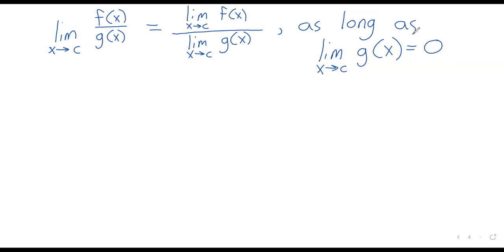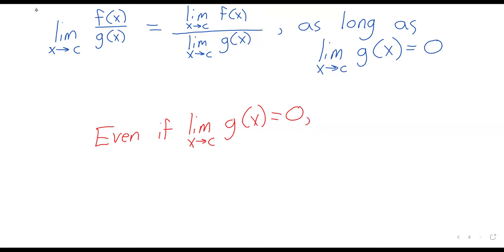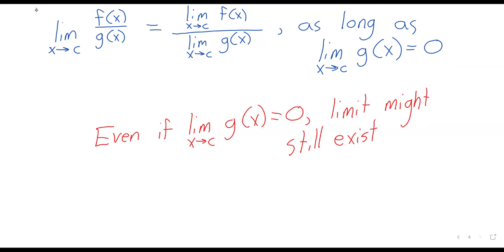This is a really important statement: even if the limit as x approaches c of g(x) equals zero, the overall limit might still exist. In fact, the main example we're going to look at shortly is an example of exactly that. A clarifying note: the condition for this rule to apply is that the limit of g(x) does NOT equal zero.